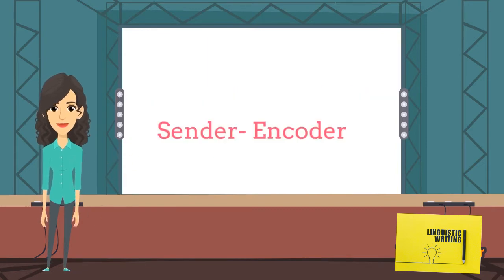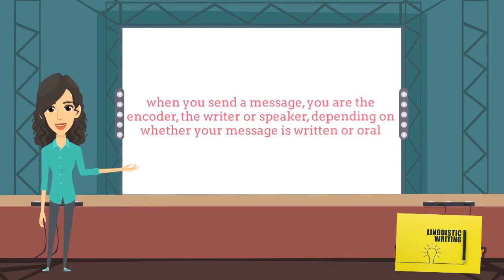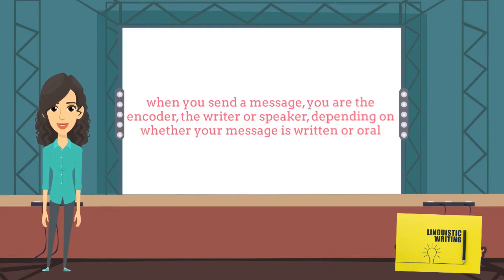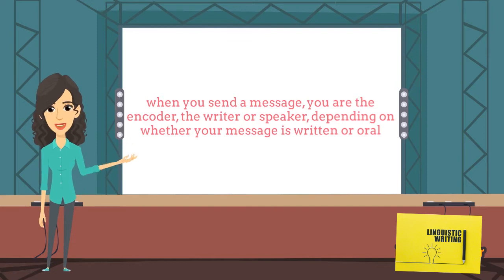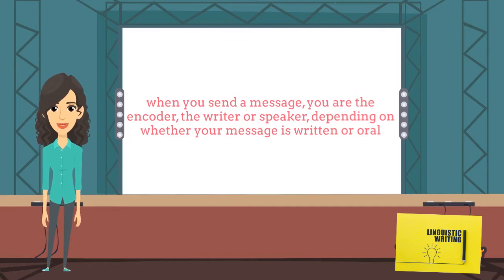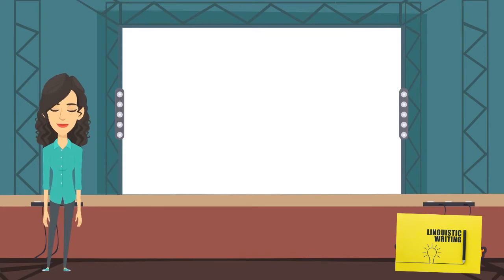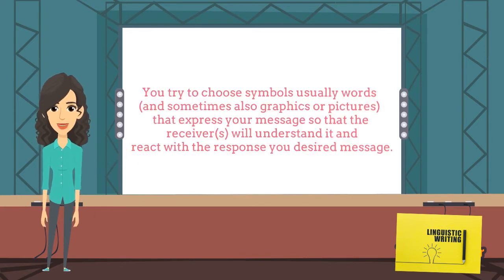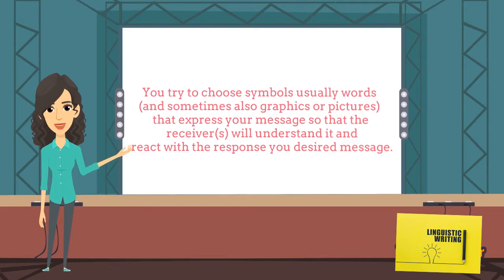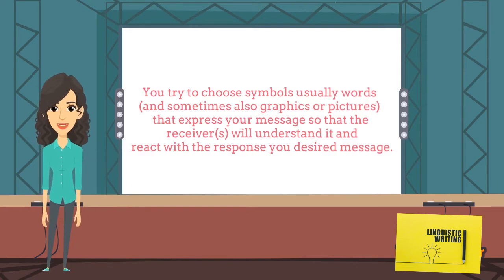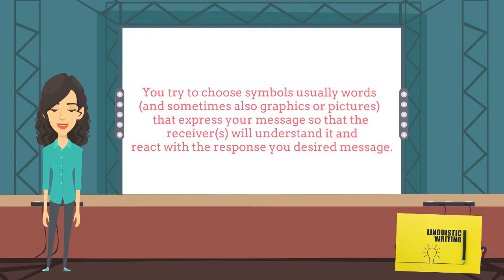Sender Encoder. When you send a message, you are the encoder — the writer or speaker, depending on whether your message is written or oral. You try to choose symbols, usually words and sometimes graphics or pictures, that express your message so that the receiver will understand it and react with the response you desired.